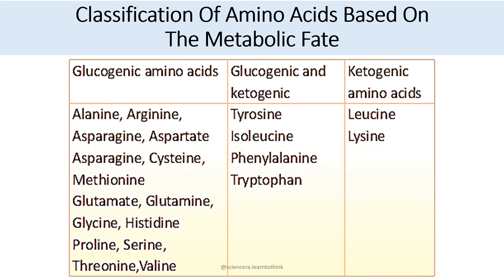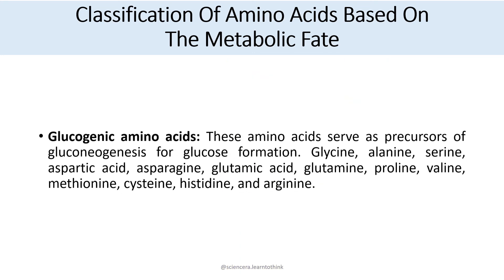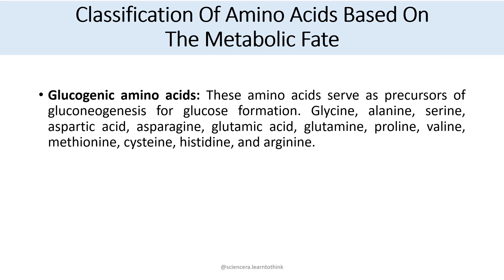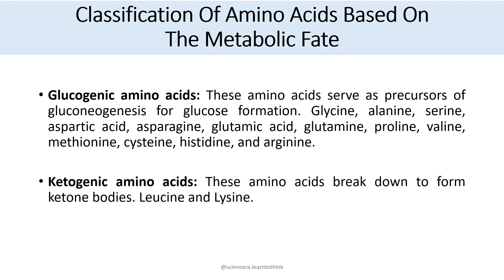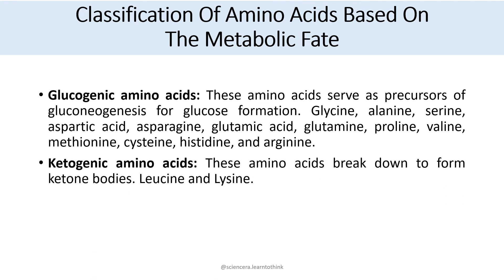Glucogenic amino acids serve as precursors of gluconeogenesis for glucose formation. These include glycine, alanine, serine, aspartic acid, asparagine, glutamic acid, glutamine, proline, valine, methionine, cysteine, histidine, and arginine.